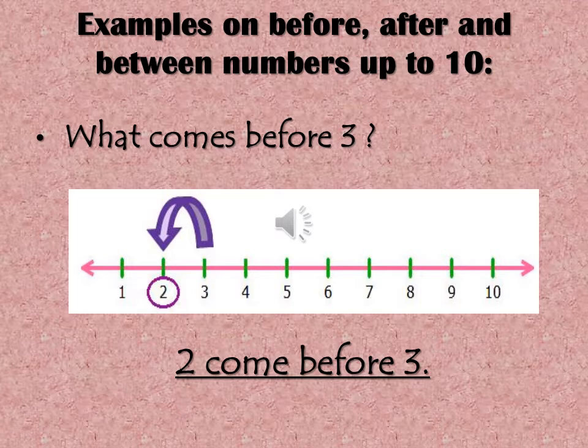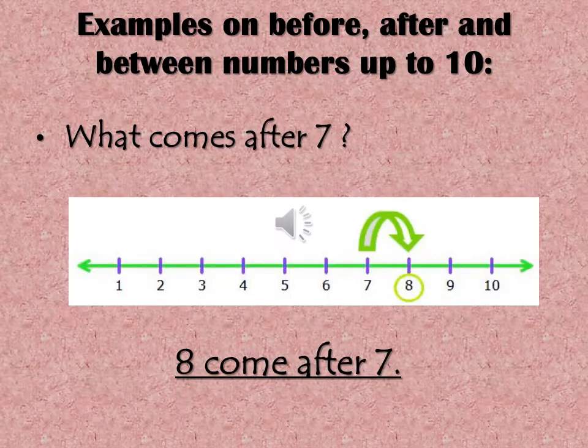One, two, and three. So what comes before three? It is two. Two comes before three — very good! Now on this number line we are asking: what comes after seven? Let's count: one, two, three.